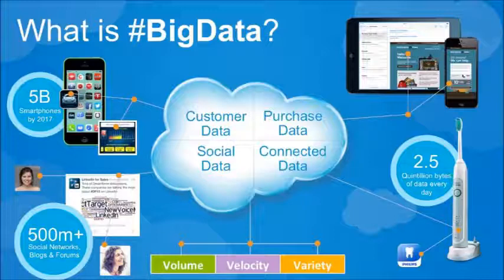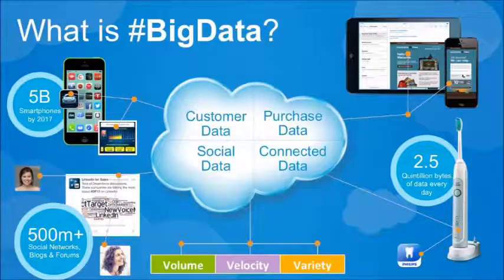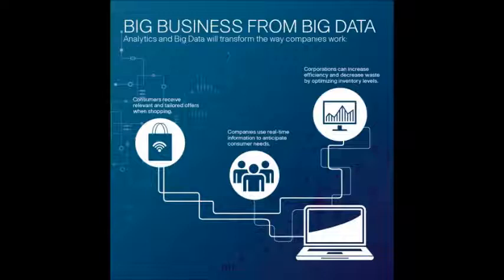The volume, the velocity, and the variety. Firstly, the volume deals with the size of the data, measured in units such as terabytes and megabytes. The variety defines the source the data emanates from, which could be devices, sensors, mobile phones, or even social networks.